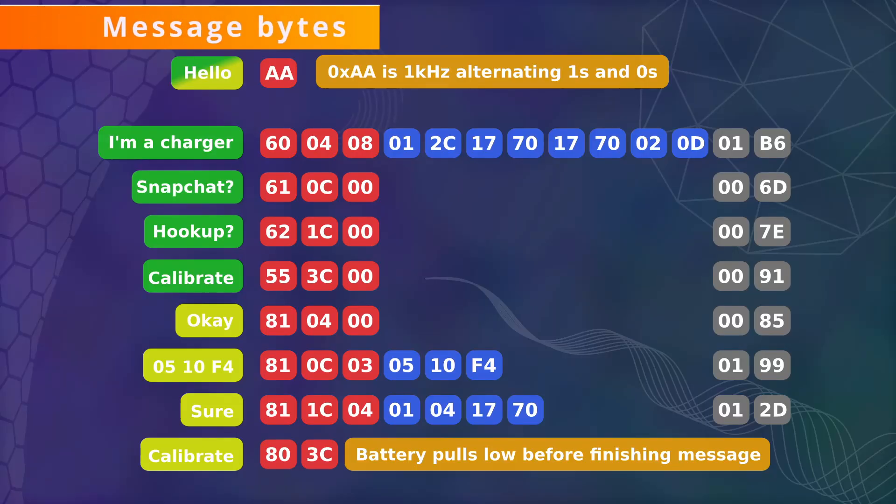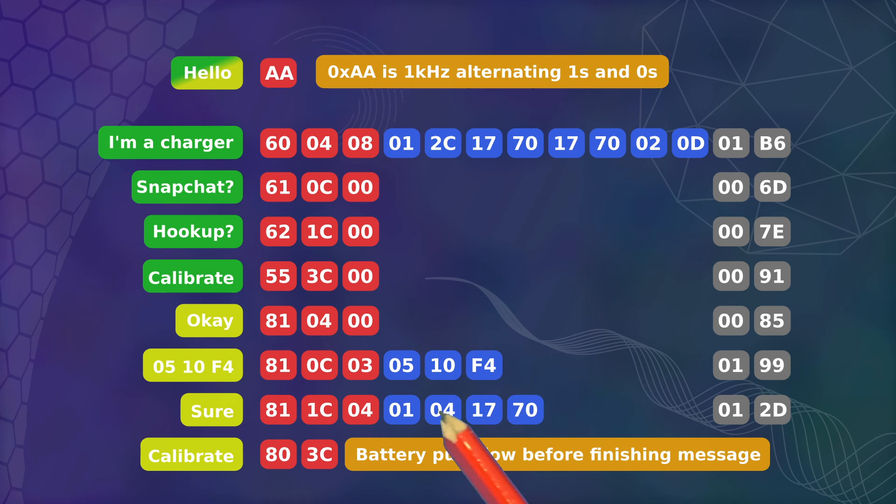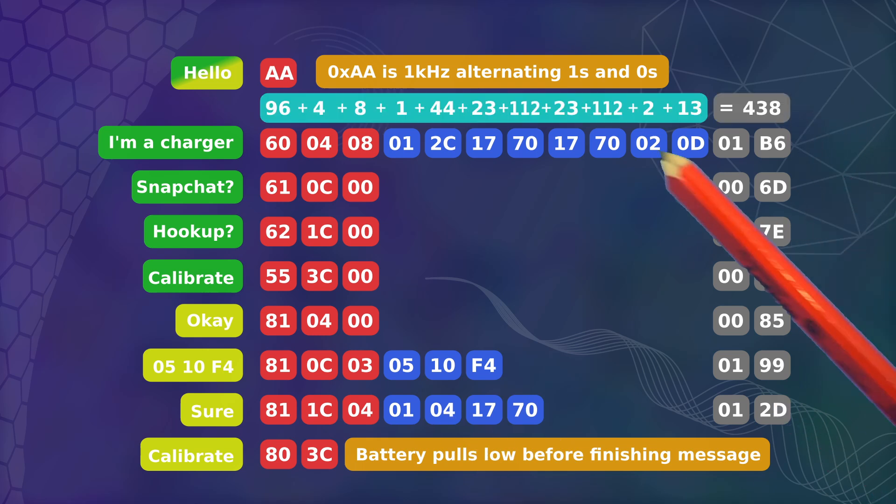Looking at the actual bytes of each message, we see that all messages have a three-byte header, an optional payload, and a two-byte checksum that is simply the sum of all the other bytes.